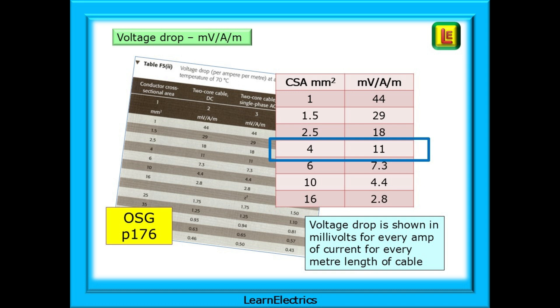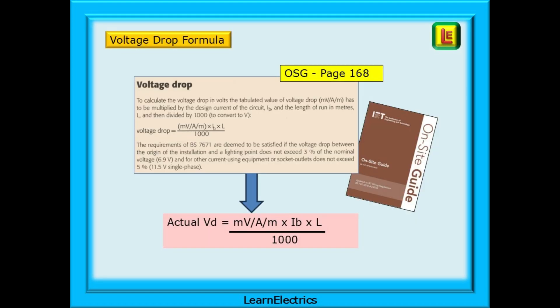Page 176 shows a variety of voltage drops, and we are interested in single phase AC voltages, with the values shown in the pink table. Page 168 of the on-site guide shows the formula that we should use in order to calculate the actual voltage drop in the cable. Note that we only measure the length in one direction, from the consumer unit to the load, and not there and back. The actual voltage drop, or VD, is equal to the millivolts per amp per metre, multiplied by the load IB, multiplied by the length in metres. This is all divided by 1000 to convert the answer into volts.